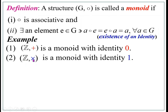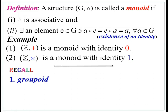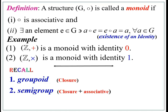Z comma multiplication — the set of integers with respect to multiplication — is also a monoid with identity element 1. Let us recall once again: groupoid satisfies one condition (closure); semi-group satisfies two conditions (closure and associativity); monoid satisfies three conditions (closure, associativity, and identity).